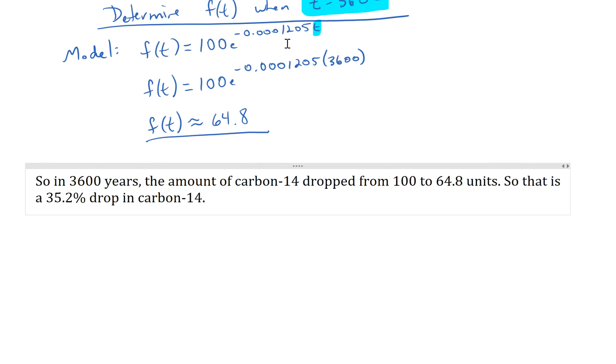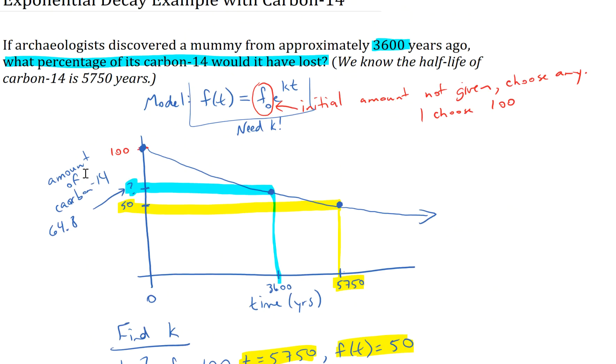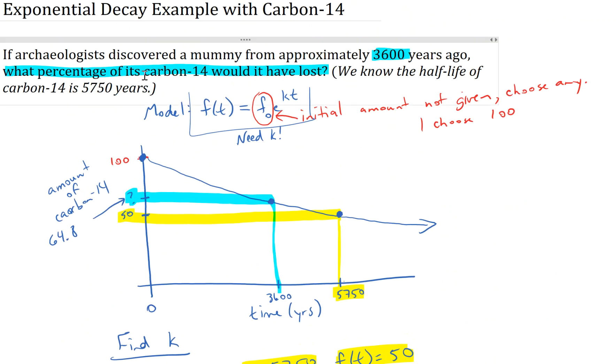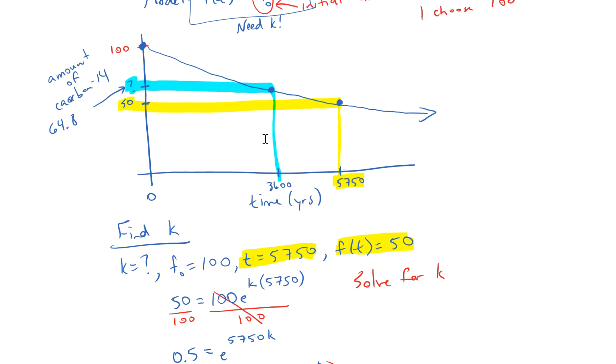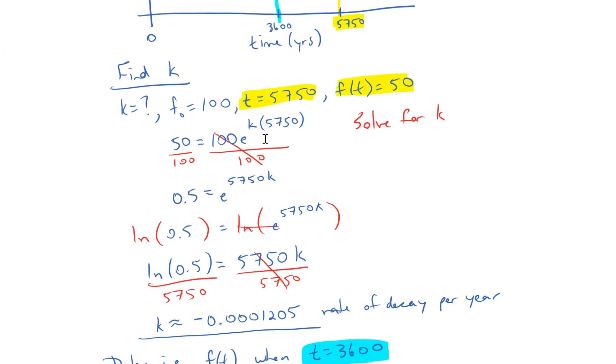So in this particular problem, we saw a couple different things. There's not much information given other than the half-life of Carbon-14. We were able to use that to first determine our k value, our rate of decay. And we did that by plugging in some arbitrary initial mass, which we chose to be 100 units. Because in this problem we were dealing with percentages, so it's nice to start with 100%.